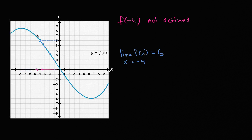And let's see if that's true from the other direction, from values less than negative four. So this is f of negative seven, f of negative six. This is f of negative five. Looks like it's around seven. This is f of negative four point five. F of negative four point one. F of negative four point zero one. F of negative four point zero zero zero zero zero one.